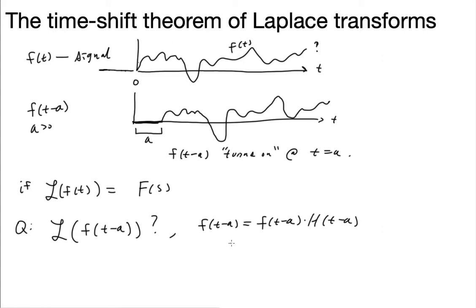And that's just kind of housekeeping here to make that work. All right. So now what I want to do then is I want to take the Laplace transform of f of t minus a times H of t minus a. And that's going to be the integral from zero to infinity of H of t minus a times f of t minus a, e to the negative st dt.